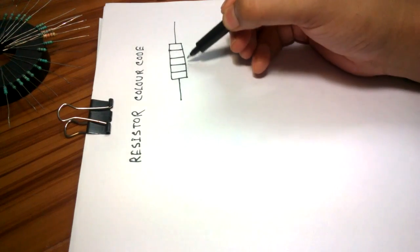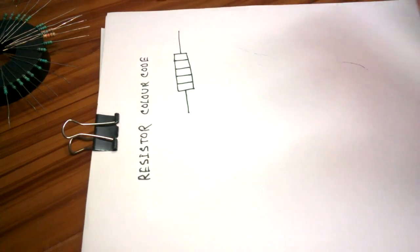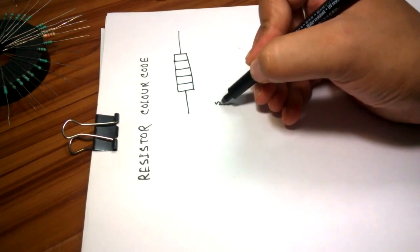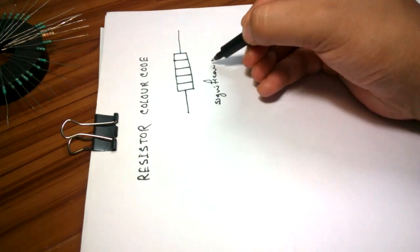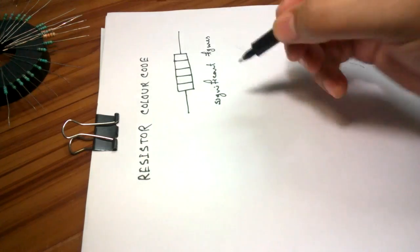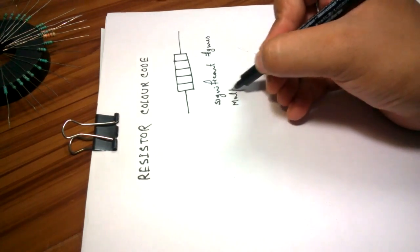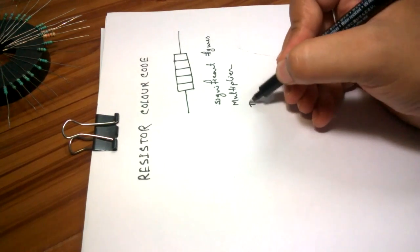Now, this is a 4 band resistor, but a resistor may be of 5 bands or even of 6 bands. Now, we will identify the name of the bands. There are three types of bands: Significant Figures, Multiplier, and Tolerance.